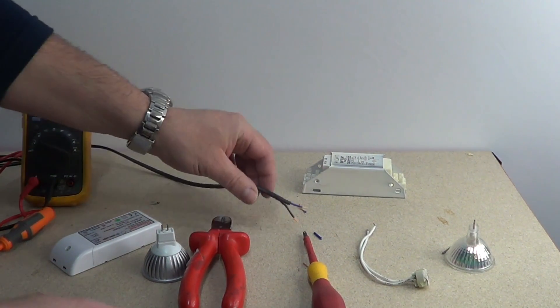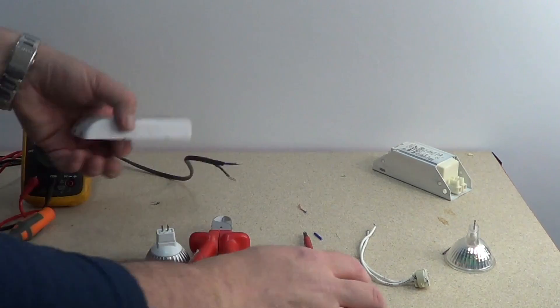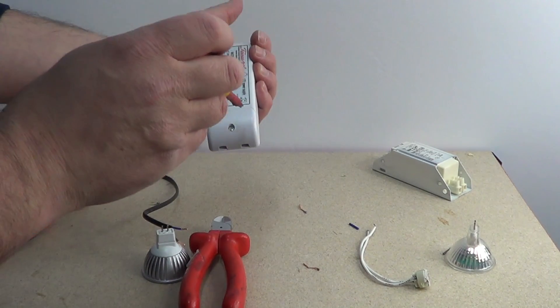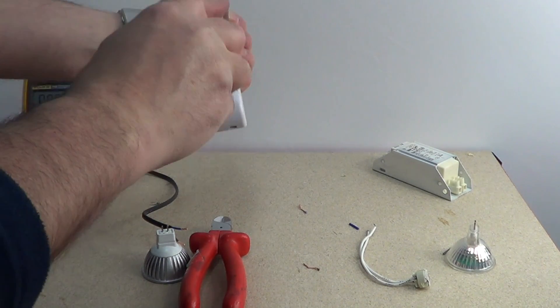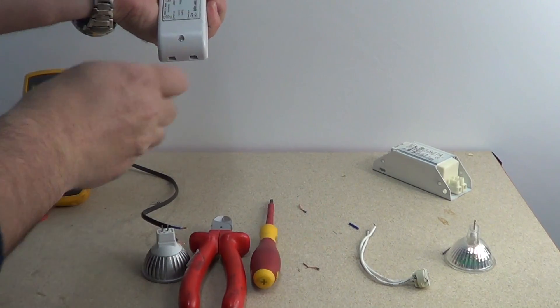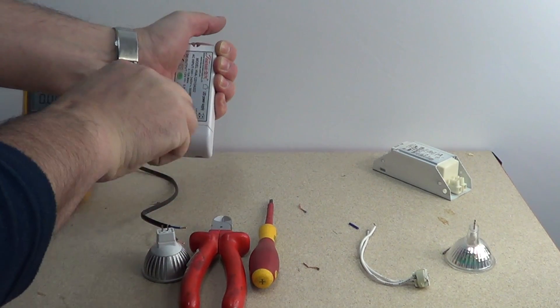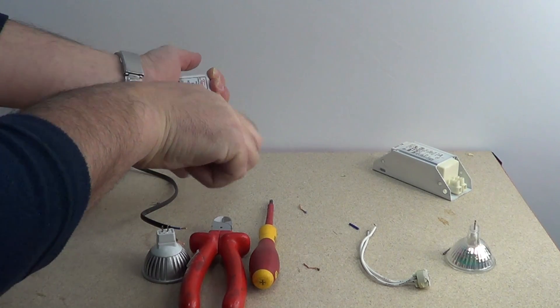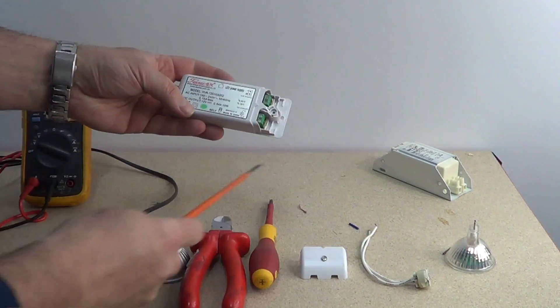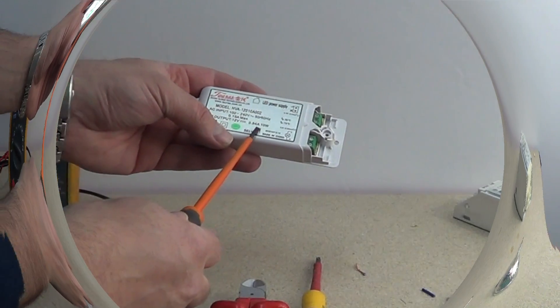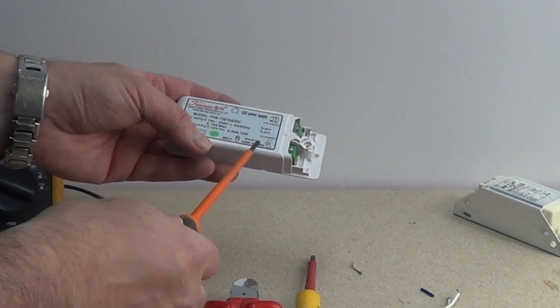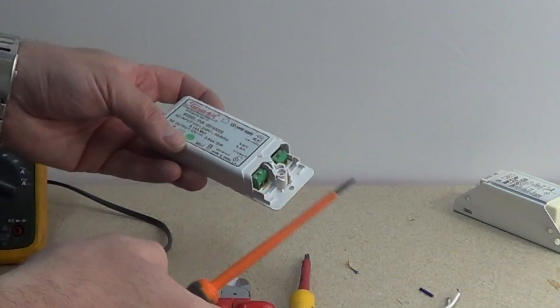Let's open up the LED driver. There you go. Okay you have two sides. The first side you have the picture of the bulb. This is where you connect the cable that goes directly to the bulb.